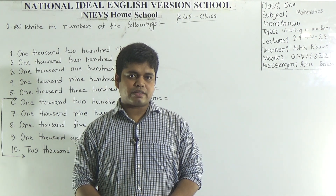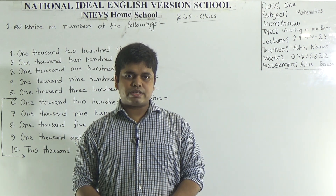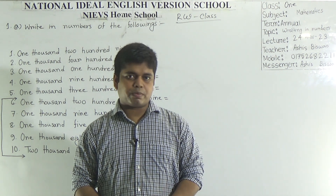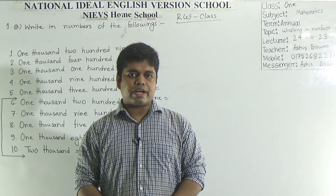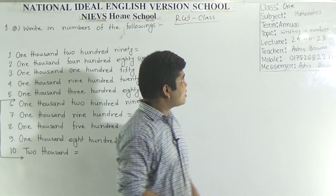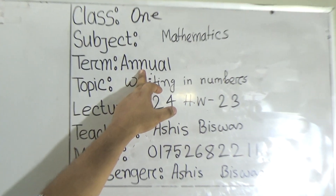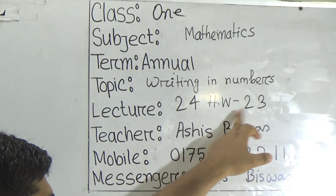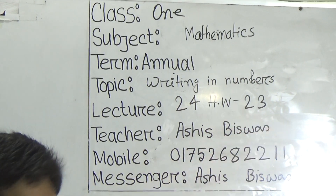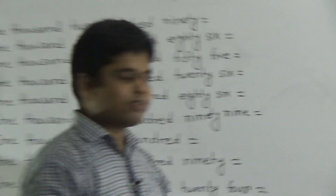Today I am going to take a math class for the students of Class 1. My dear students, our today's topic is 'Write in Numbers.' Today is our lecture number 24 of annual term and today's homework number 23. Today is our RW class — RW means Revision Work class.